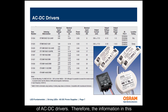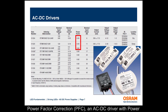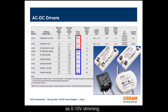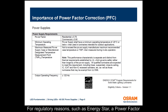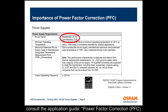An AC-DC driver can have the following constructions: without power factor correction, or with power factor correction. An AC-DC driver can be TRIAC dimmable, non-dimmable, or dimmed by other means such as 0 to 10 volt dimming. For regulatory reasons such as ENERGY STAR, a power factor greater than 0.9 is required for commercial applications and greater than 0.7 for residential applications.